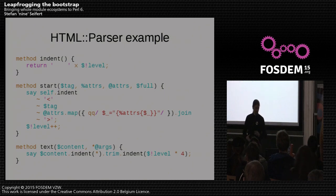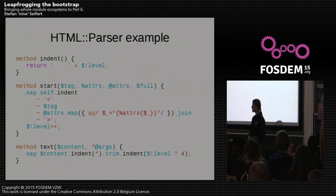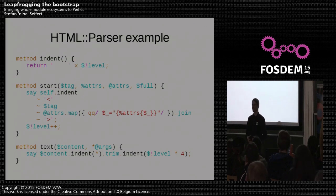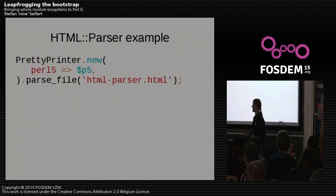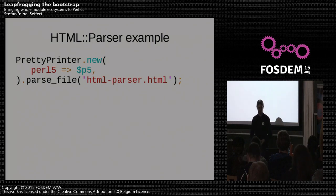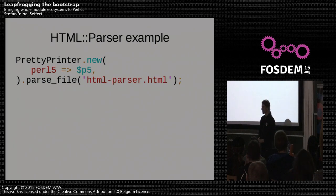To finish this up, running our pretty-printer HTML::Parser example is pretty much as straightforward as you can imagine — just passing the Perl 5 object and calling methods. I would really like to stop here again, but there's another gotcha.